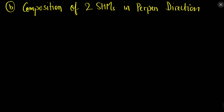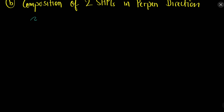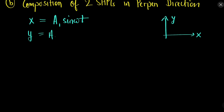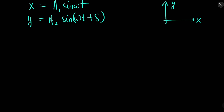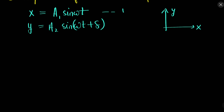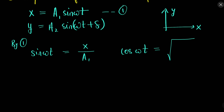In the first case the directions were the same. When the directions are perpendicular to each other, we will need to take x and y, because one SHM will be in the x direction and one will be in the y direction. So one SHM will be x = A₁ sin(ωt) and one will be y = A₂ sin(ωt + δ), where δ is the phase difference. Using equation one, sin(ωt) = x/A₁.